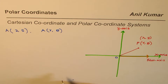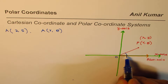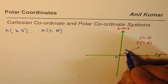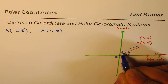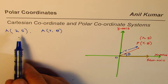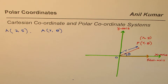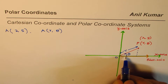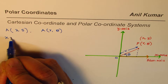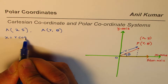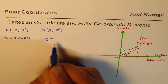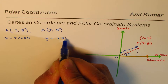Theta is going to be the counterclockwise angle and r is going to be the magnitude. In general, the x value can be written as r·cos(θ) and the y value can be written as r·sin(θ).